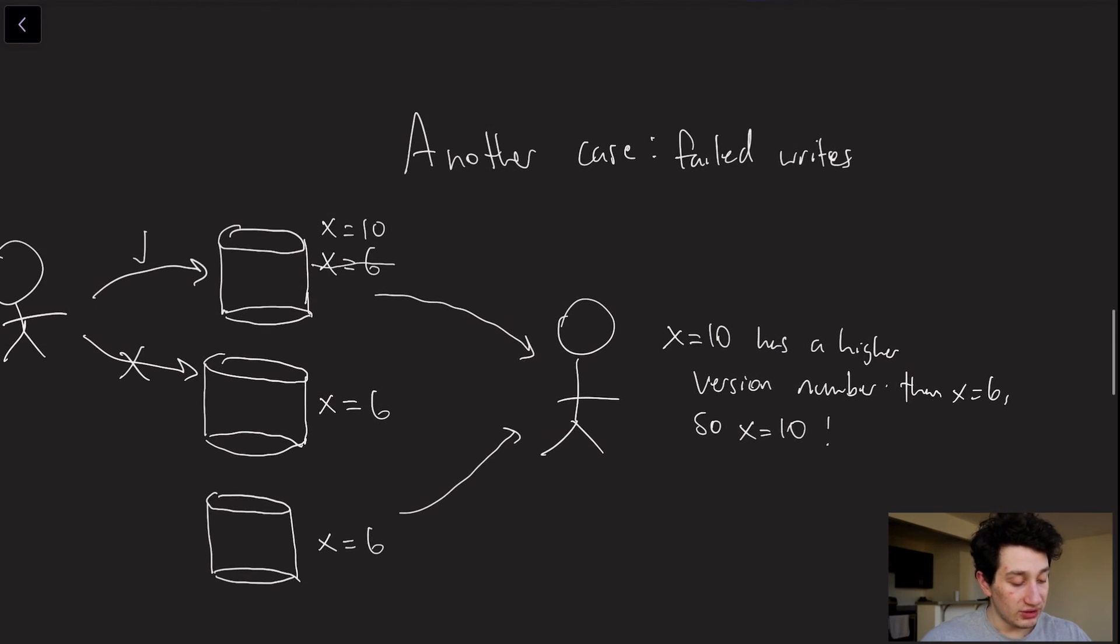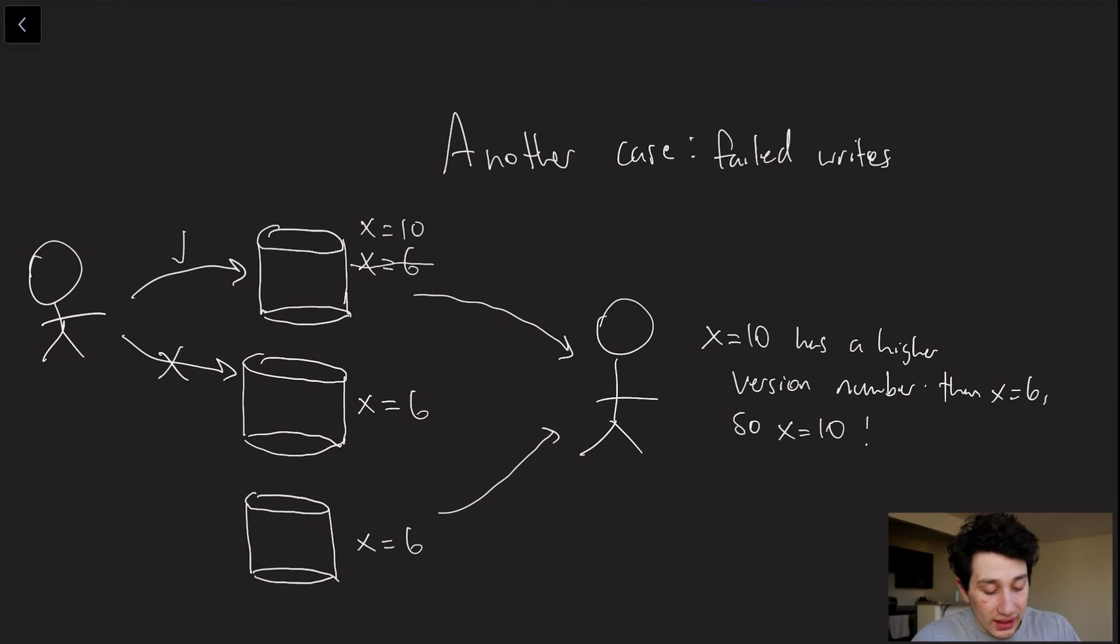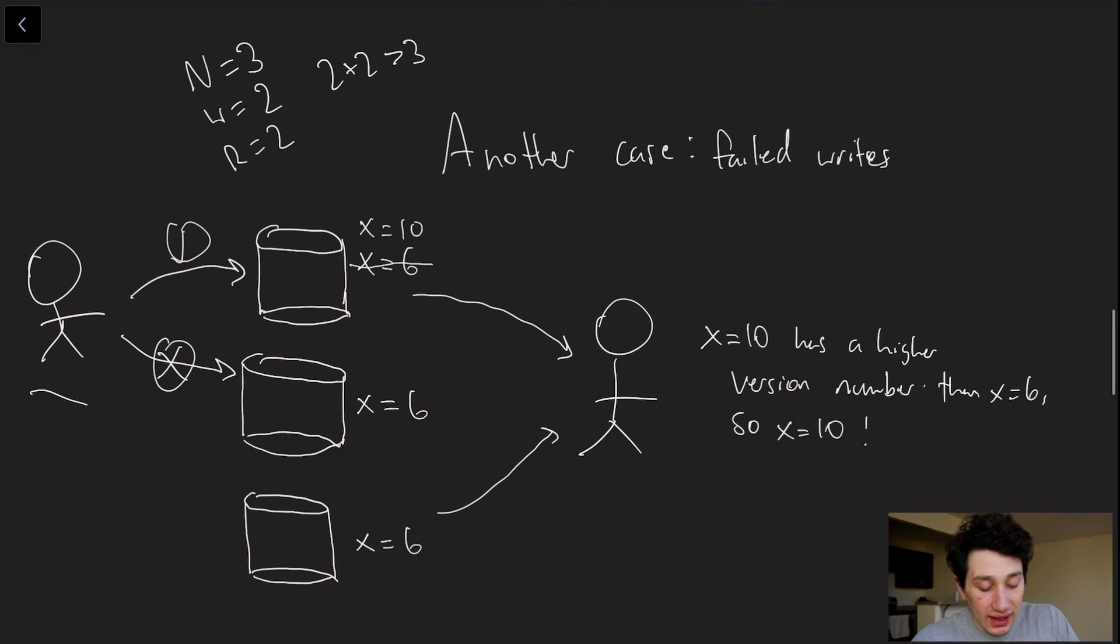Let's move onwards to another case, which is just when writes fail. Let's say we have a three-node setup. In this case, N is equal to 3, W is equal to 2, and R is equal to 2. So 2 plus 2 is greater than 3, so we have a successful quorum. This guy on the left is going to now write to two nodes. He attempts to write to two nodes, and one succeeds on the top, and the other is going to fail. Let's say beforehand, all three databases in the cluster agreed that this value X was equal to 6. And this guy was trying to write that X is equal to 10, and he succeeds on just one node.